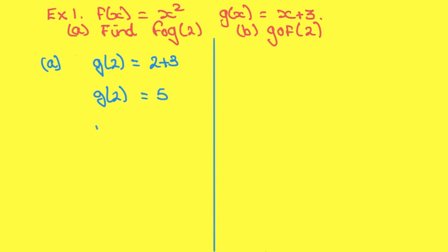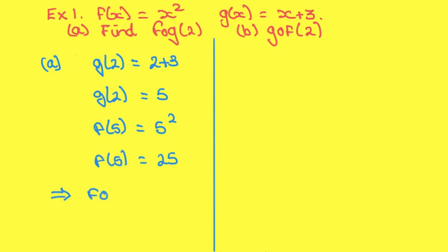Then put 5 into f, so do f of 5, which equals 5 squared, so f of 5 is equal to 25. Therefore, f of g of 2 is equal to 25.